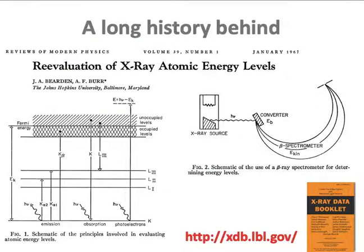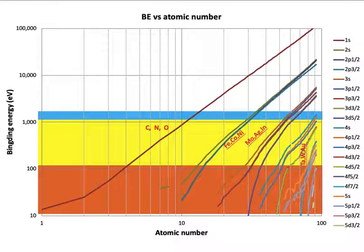Since XPS was invented, many researchers have studied the energy of electrons in each atom and each orbital. Theory has also been developed to support the understanding of electron energies in atoms, and we have a database available on the website that everyone can access. The binding energy is plotted as a function of atomic number, and each electron orbital shows a different binding energy, so you can identify the atomic element from XPS data.